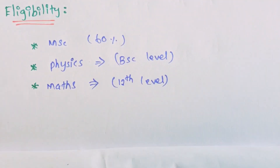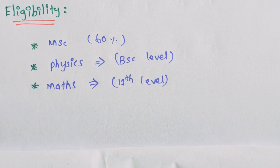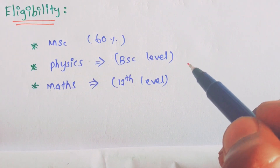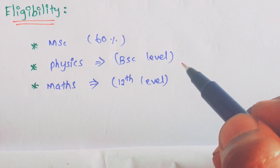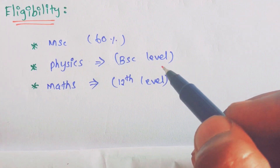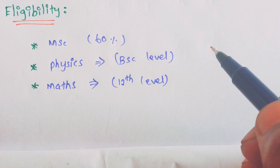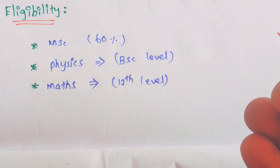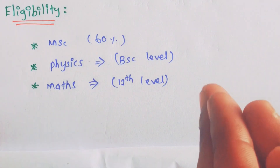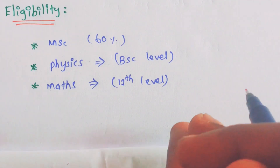Eligibility: MSc is required. You must have completed MSc Chemistry, or be in the final semester of MSc — the fourth year. You need to score 60 marks. Both MSc and BSc marks are considered; every exam considers MSc, but for some exams, BSc marks are also taken into account. In BSc, you need to score 60 marks.